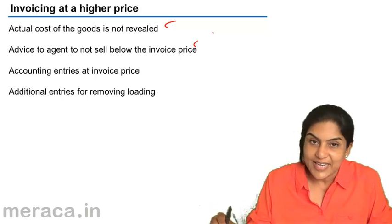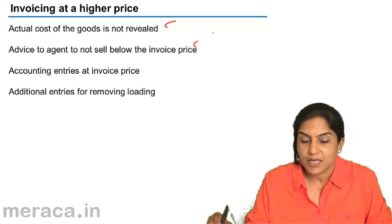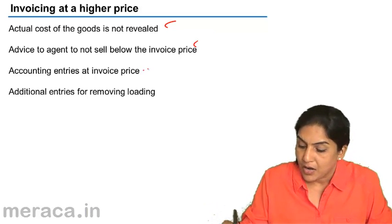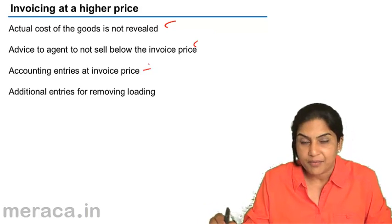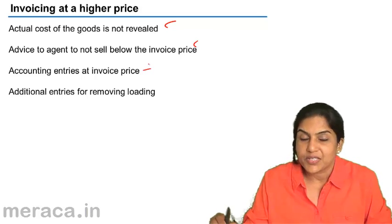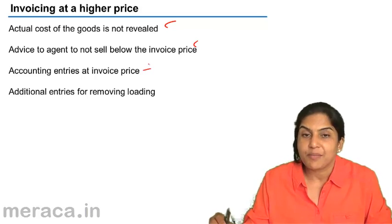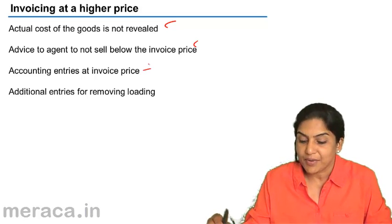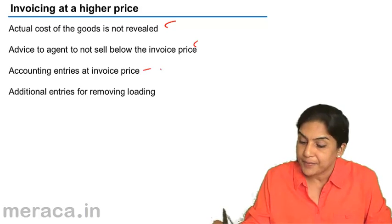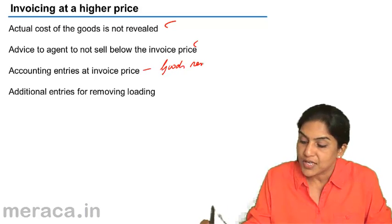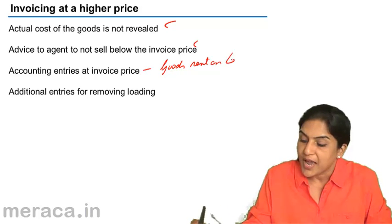What are the accounting entries? When goods are sent on consignment, we say consignment account debit to goods sent on consignment at invoice price.